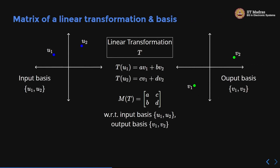Now we ask a slightly more complicated question: the matrix of a linear transformation and basis. So far, we have always written the matrix of a linear transformation with respect to the canonical basis. Now I want to think of a matrix for the linear transformation t, but with some arbitrary input basis u1, u2 and an arbitrary output basis v1, v2.